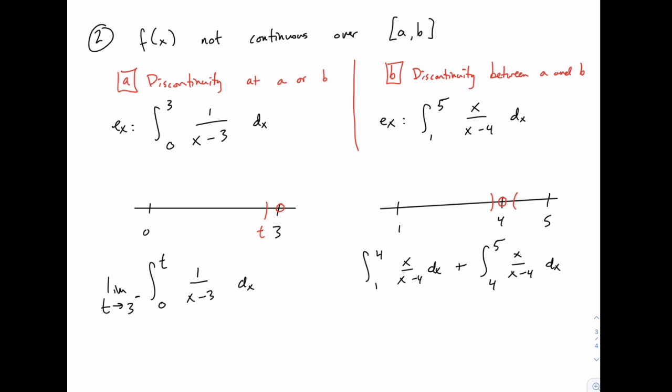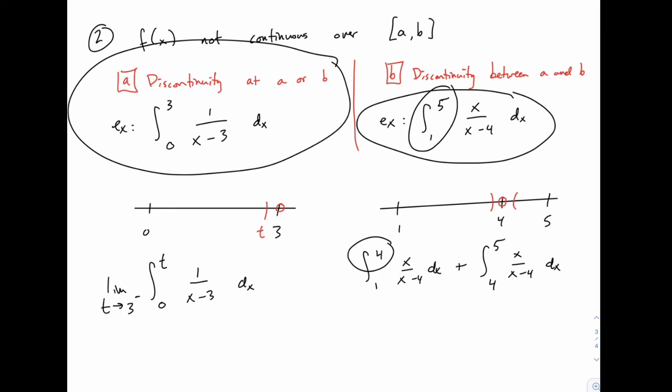we've changed this problem, where we have a discontinuity between our bounds of integration into one of this type, where we have the problem at either the upper or lower bound of integration. So in other words, we've taken a problem of type B, and we've exchanged it for two problems of type A,